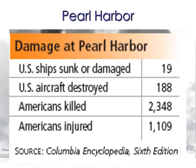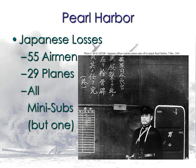Some of the results of Pearl Harbor: America lost 19 ships, 188 aircraft were destroyed, over 2,000 Americans died, and over 1,000 more were injured. Japan's losses were relatively small — they lost 55 airmen, 29 planes, and all but one of their midget subs. Looking at Japanese losses, it's almost nothing — a pretty low number for an attack of that scale.